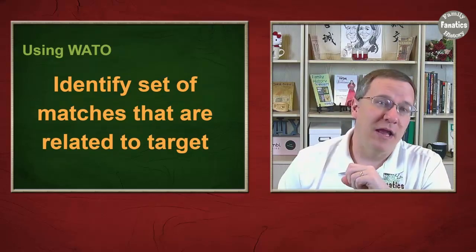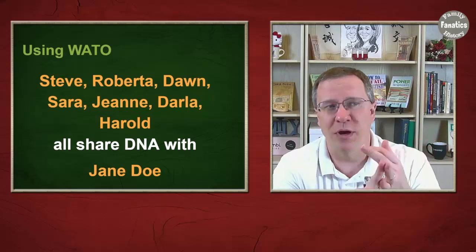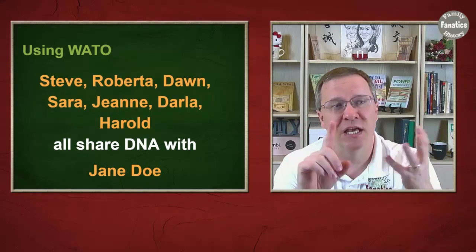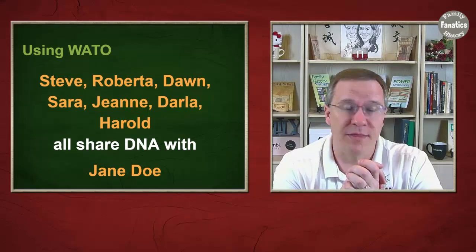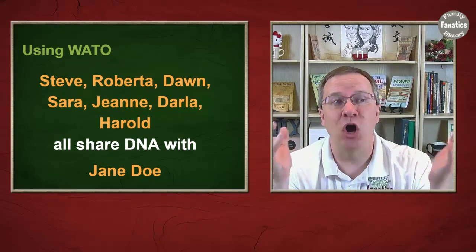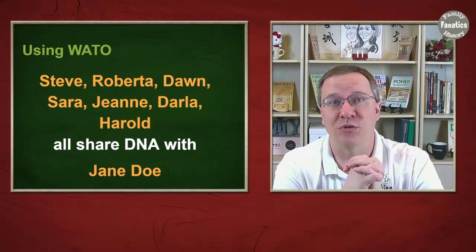In my example here I'm going to use these people: Steve, Roberta, Dawn, Sarah, Jean, Darla, and Harold. All share DNA with Jane Doe, and they happen to all share DNA with each other as well because they are somewhat closely related.